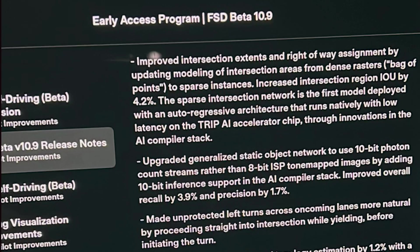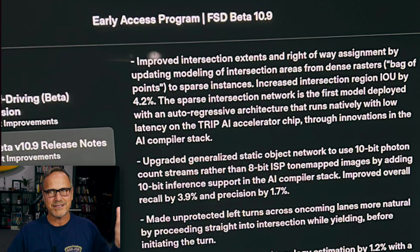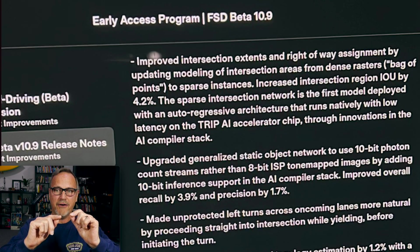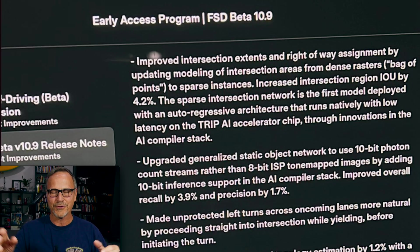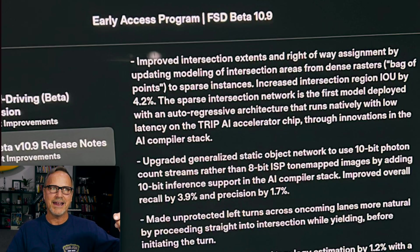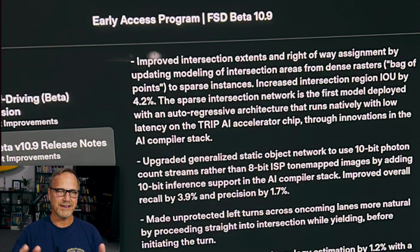That's a huge amount of information in one paragraph, and I think it shows impressive improvement on Tesla's part. As a Full Self-Driving beta driver — I haven't gotten 10.9 yet, I expect it late Monday or early Tuesday — what I expect to see is that the flickery intersection visualization should become much more rock solid. The car should understand curbs, open space, lane lines, and lights in a much more consistent way.